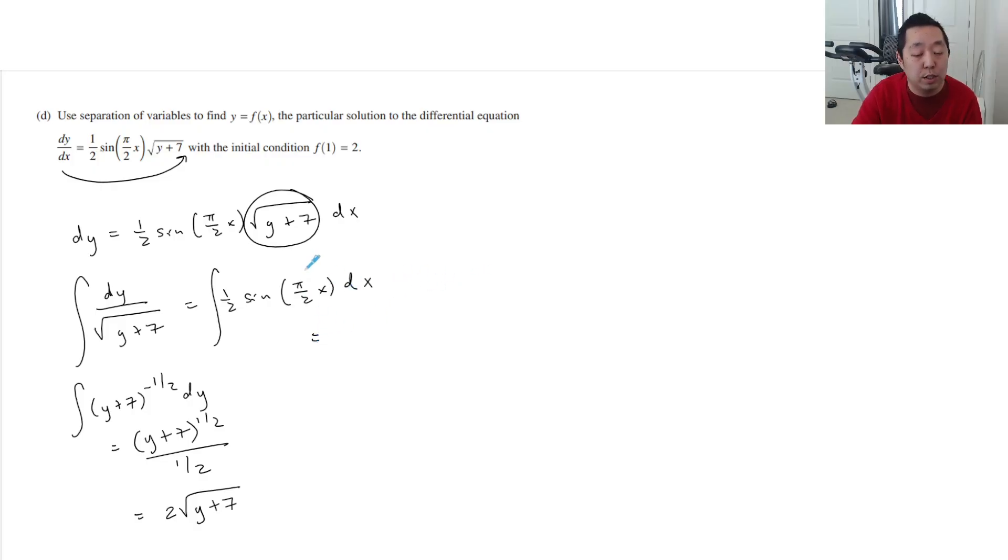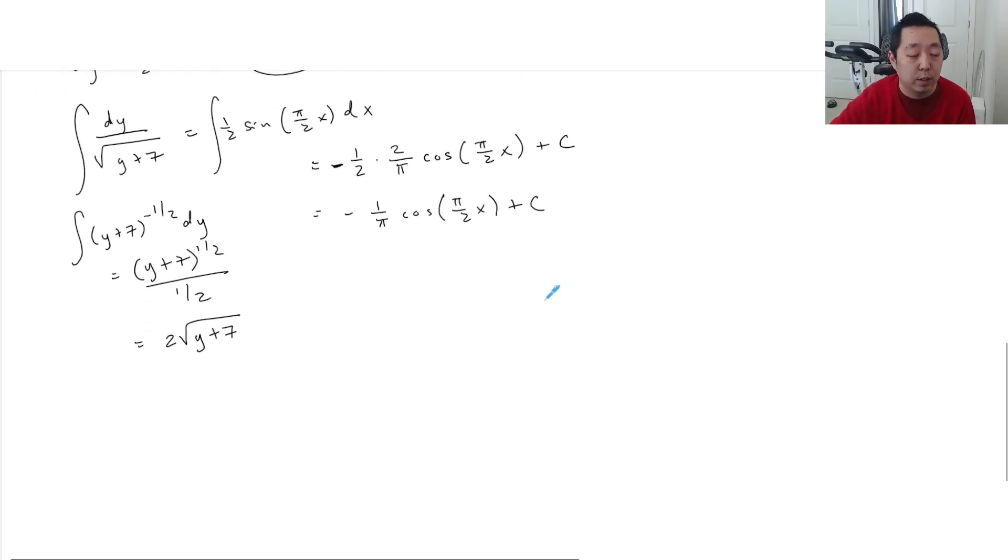Let's do the right integral here. You can do a u substitution if you want, or if you're just kind of fast at it a little bit, you just know that I have to do 1 over 2. I have to multiply by 2 over pi. I have to do cosine, but I have to put a negative sign because the derivative of cosine is negative sine. So there's a negative sign there. And then when I take the derivative of this, a pi over 2 pops out. That's why I put a 2 over pi to cancel that out. And then that's it. And then plus c. So this would be negative 1 over pi cosine pi over 2x plus c. Now I always put the plus c on with the x side, even though both sides technically have a plus c, but you can just lump all the constant over to one side.